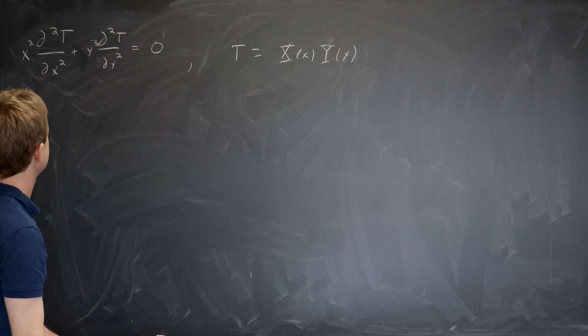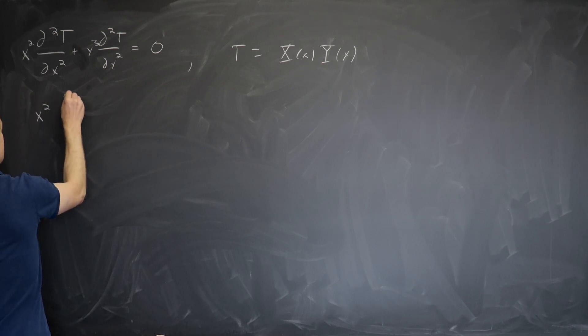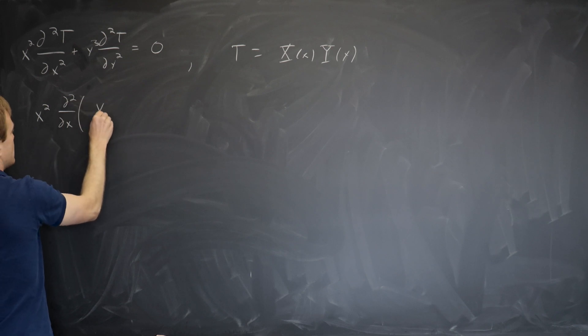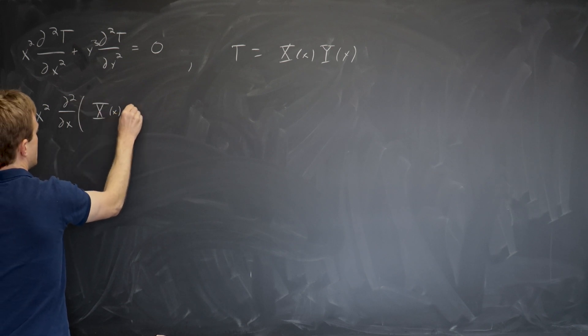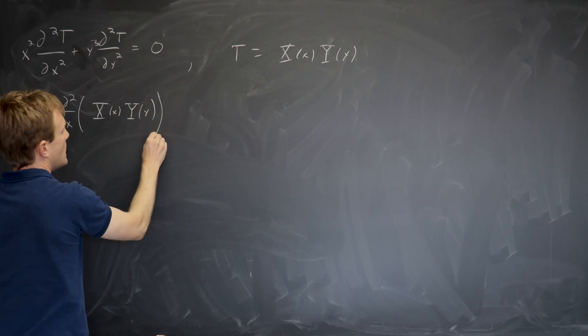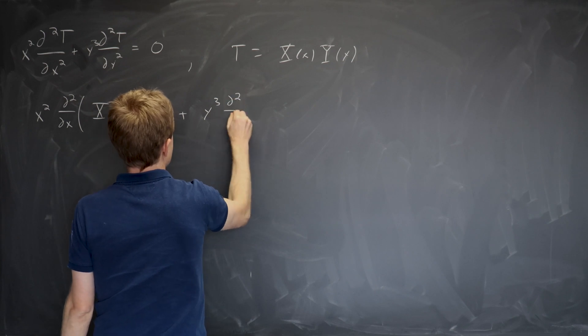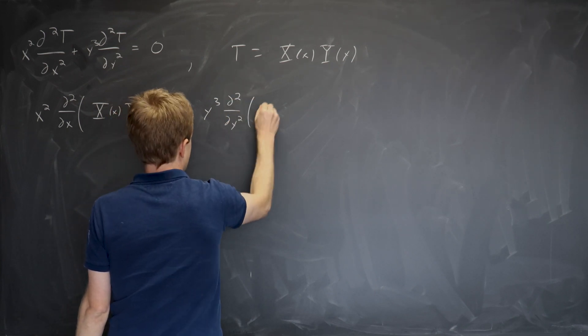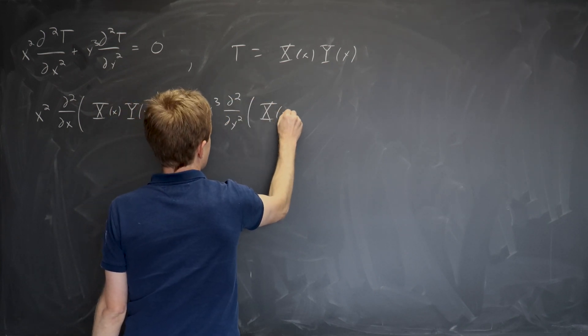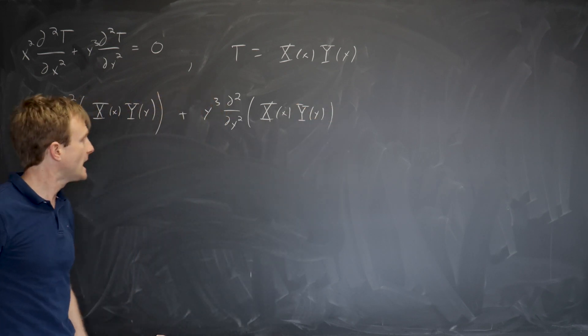So we do the same set of steps we plug in. This says x squared times the second partial derivative of X of x times Y of y plus y cubed times the second partial derivative with respect to y of X of x times Y of y.